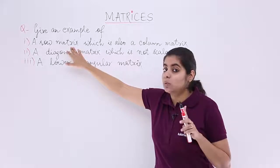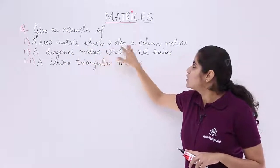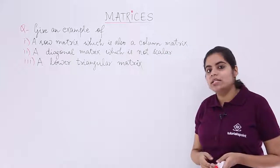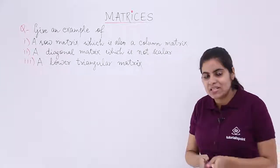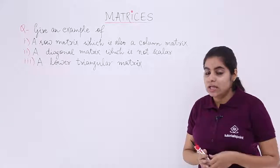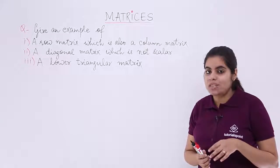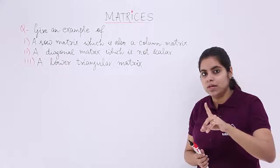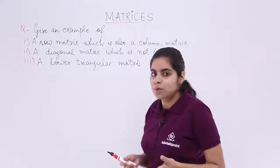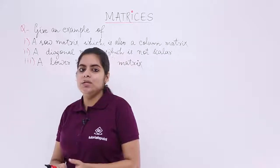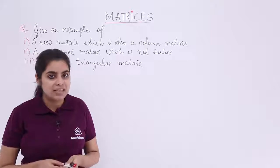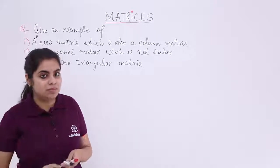A row matrix, as you already know, has only one row. But this part asks for a matrix which is both a row matrix and a column matrix. That means a matrix which has only one row and also only one column. How is this possible? It is only possible when it is a matrix comprising of only one element.